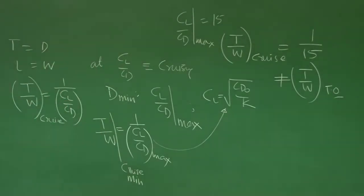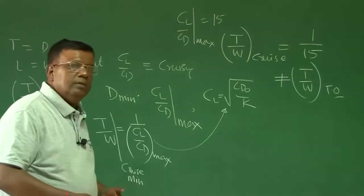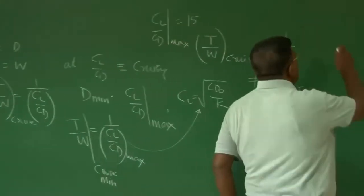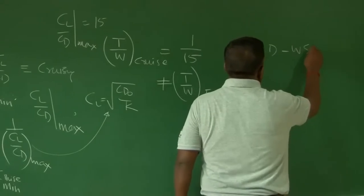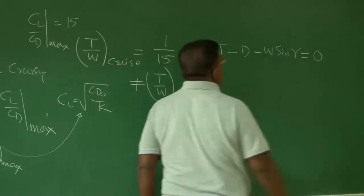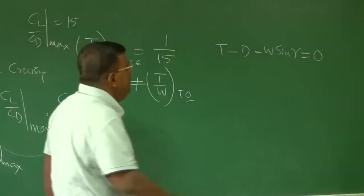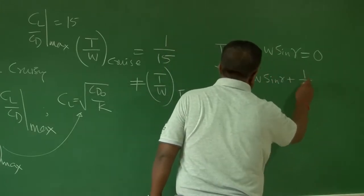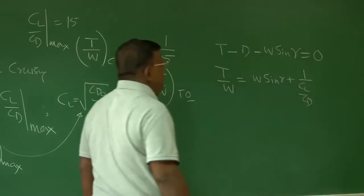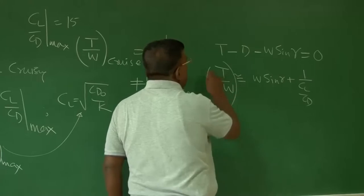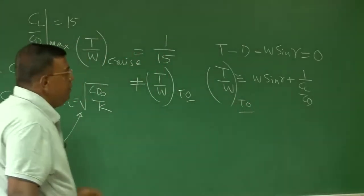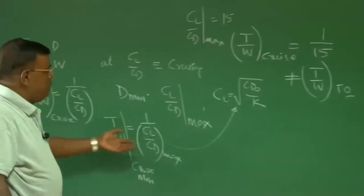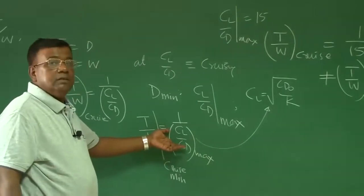Why? For two reasons. For T/W at takeoff, we need to have a different criterion. We have seen that if I write T minus D minus W sin(γ), and if I want to take off with steady climb — a small climb — then T/W is roughly equal to sin(γ) plus 1/(CL/CD), which is approximate. So T/W at takeoff will be more governed by the climb angle γ, while T/W cruise will be more driven by (CL/CD)_max.